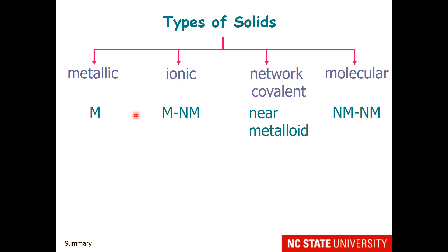Please recall that there are four general types of solids: metallics, which are composed of metals on the periodic table, and ionic solids.